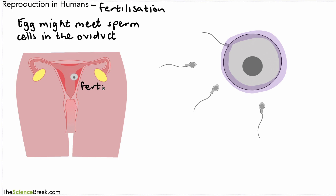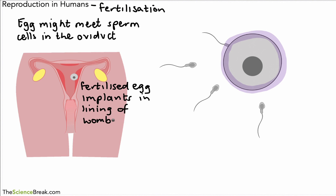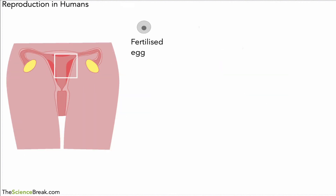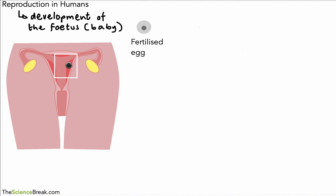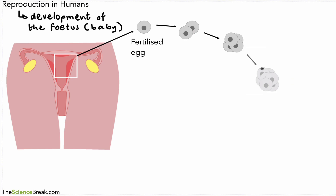The egg forms an instant barrier to any more sperm cells, so only one sperm cell can enter. Then we have a fertilized egg. That egg continues to move down the oviduct and implants itself into the lining of the uterus — remember uterus and womb are the same thing. If we magnify in, the fertilized egg is now a cell; it divides into two cells, then four, continuing to divide until we have what's called an embryo.